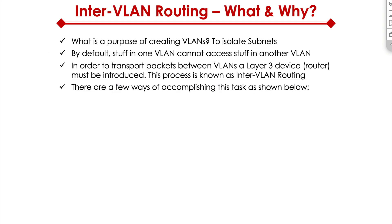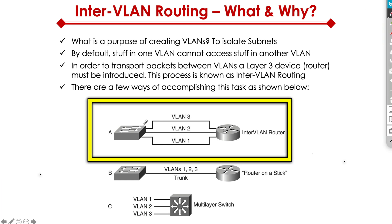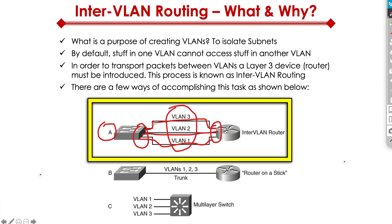There are multiple ways of accomplishing this task. Option A is where we have physically dedicated links between our switch and router for each VLAN, so each VLAN is a separate interface. It's not a great design in the sense that you're burning up and using way too many ports on your switches and routers. In a typical corporate environment, you'll see dozens of VLANs, if not hundreds. So this could get ugly pretty quickly, and typically in the real world you won't see this being utilized much unless you have a very cornered case scenario.